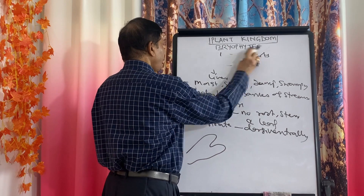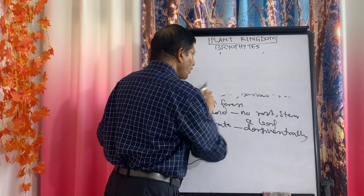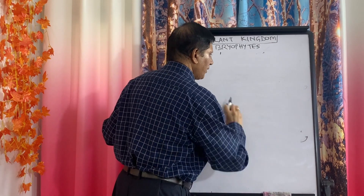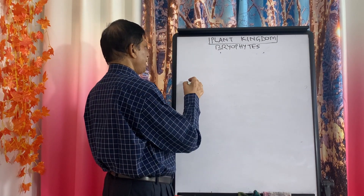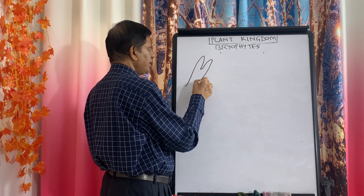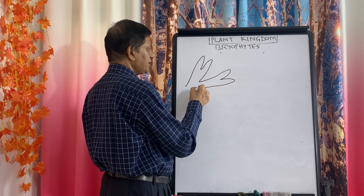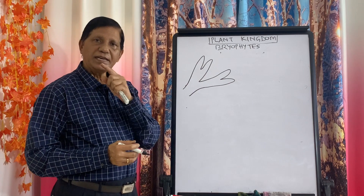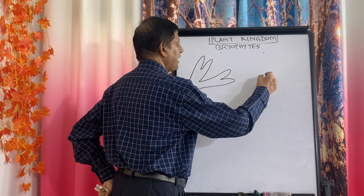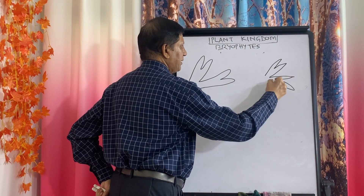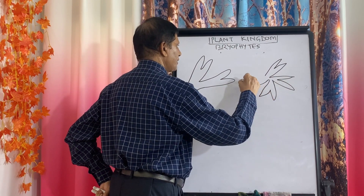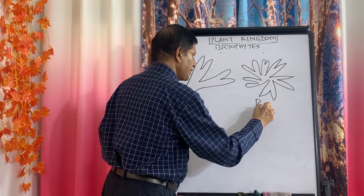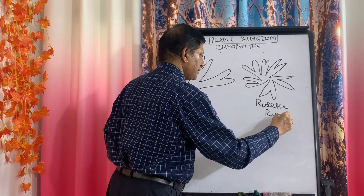The thallus is dichotomously branched, meaning each time it divides into only two — not more than that. In some species of Riccia, it is so extensively dichotomously branched that it gives a rosette appearance, meaning it is completely circular. This rosette appearance is found in some species of Riccia.